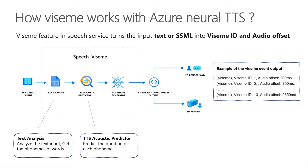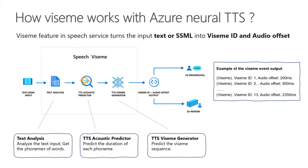The TTS acoustic predictor component is used to predict the duration of each phoneme. Finally, the TTS Viseme generator component predicts the Viseme sequence based on the outputs of the text analysis and acoustic predictor.